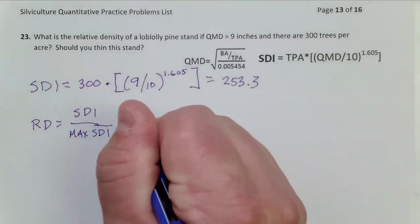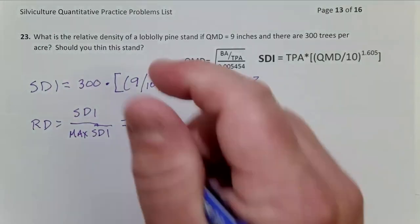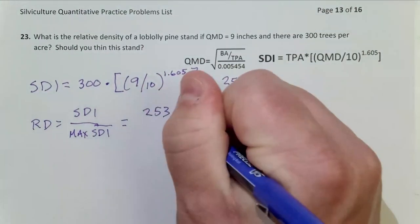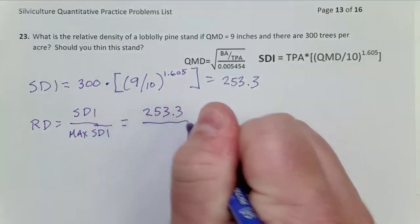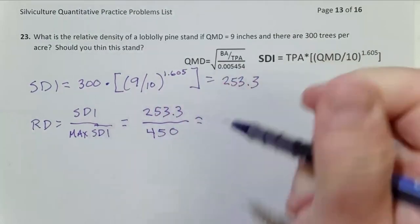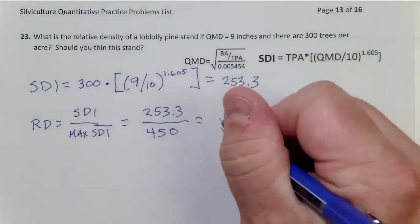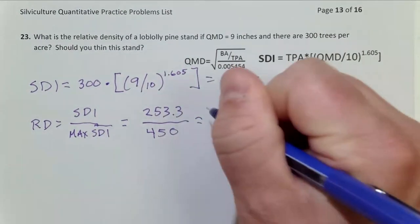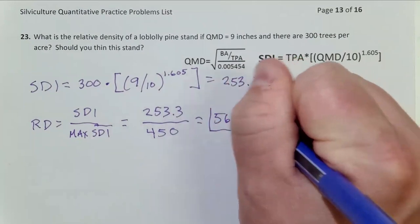So now, because I have that memorized for Loblolly, I can do this equation. 253.3 divided by the max, which is 450. Put that into the calculator, and I get 56.3 percent. So this is my correct relative density for this stand. This is the number that I need to make a decision on.